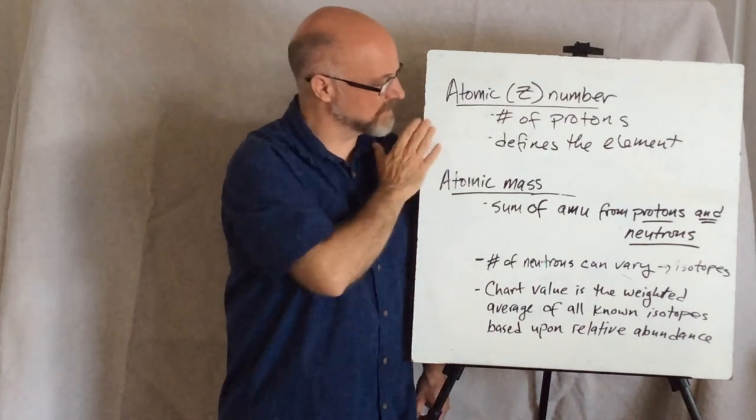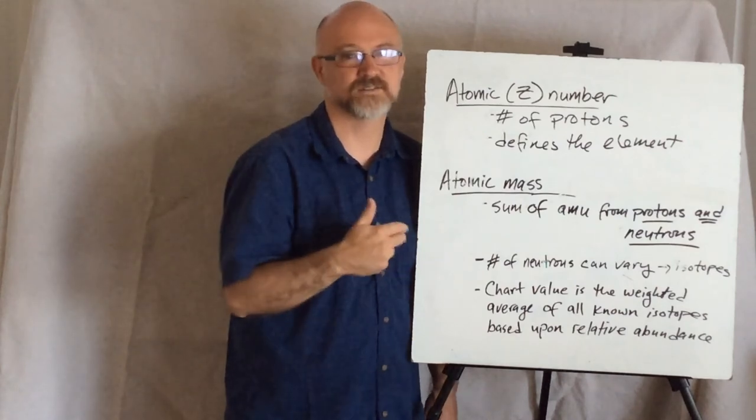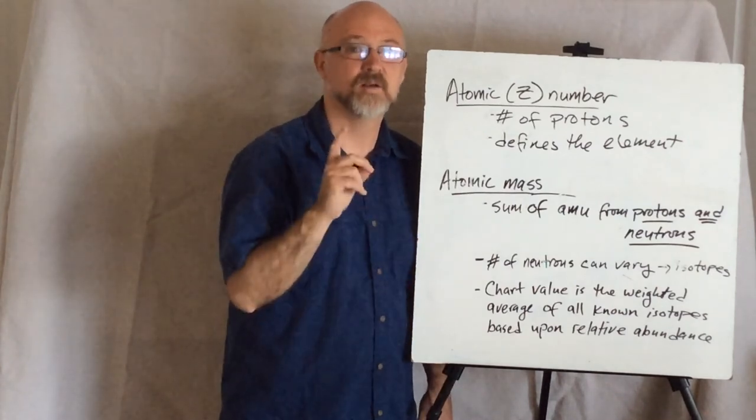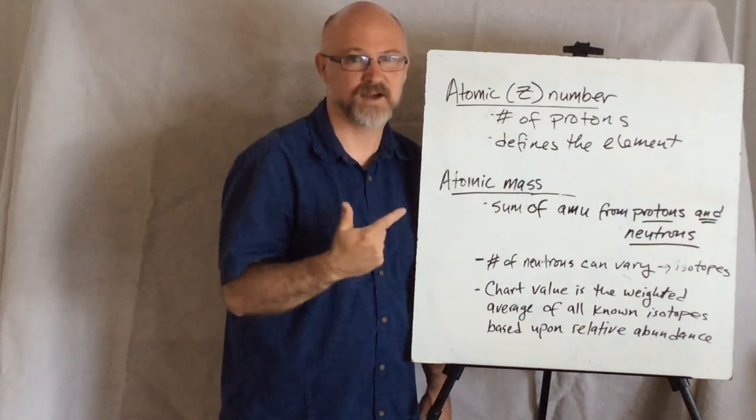So, atomic number, number of protons. Atomic mass, protons and neutrons. Notice electrons don't factor into this at all. But electrons are going to be very important when we talk about reactivity and bonding.